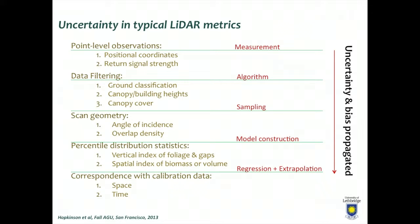There is also uncertainty associated with the angle of incidence on terrain and overlap density between flight lines. If we're constructing models — say canopy biometrics — there'll be uncertainties associated with the model construction itself. For example, how do we take a percentile distribution of a point cloud and turn that into an attribute, say a biomass, carbon, or habitat-related classification attribute? So the model itself introduces uncertainty.